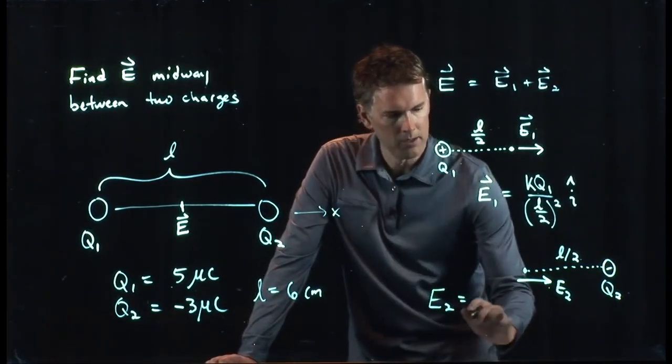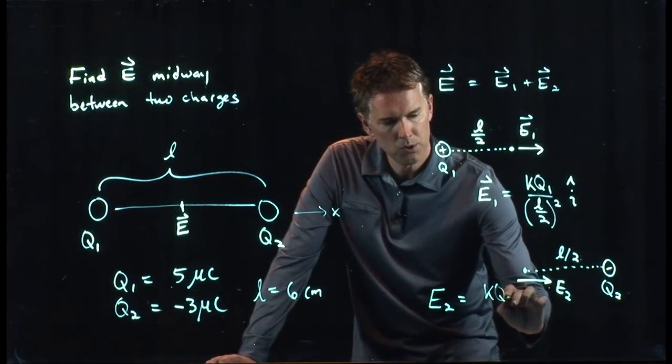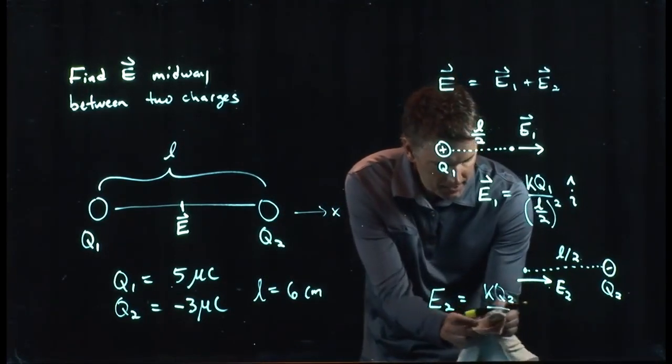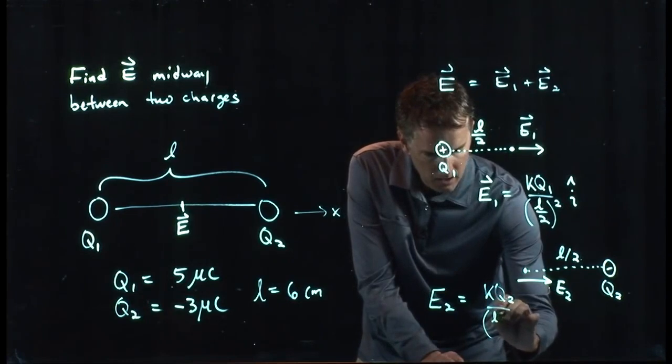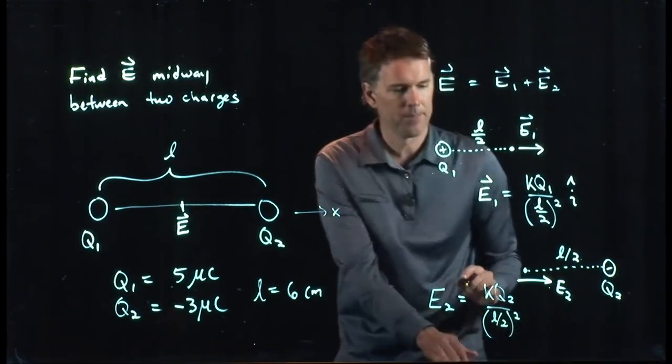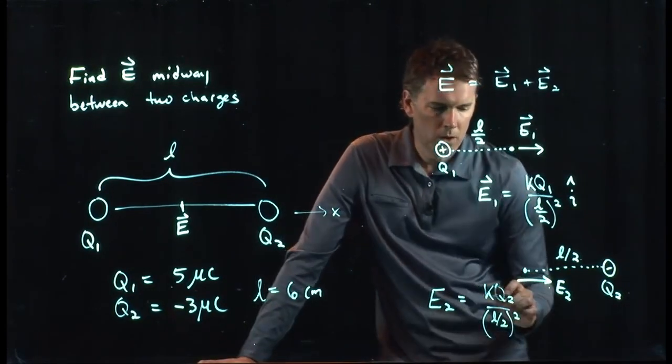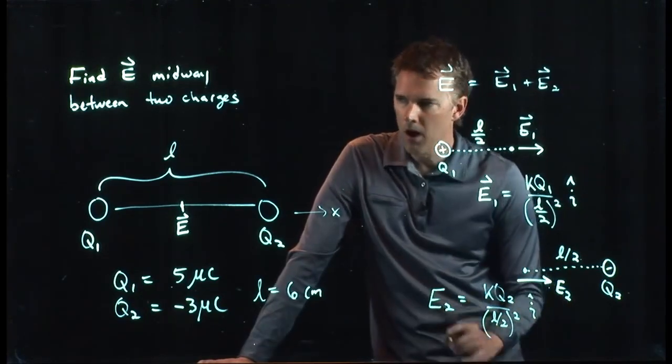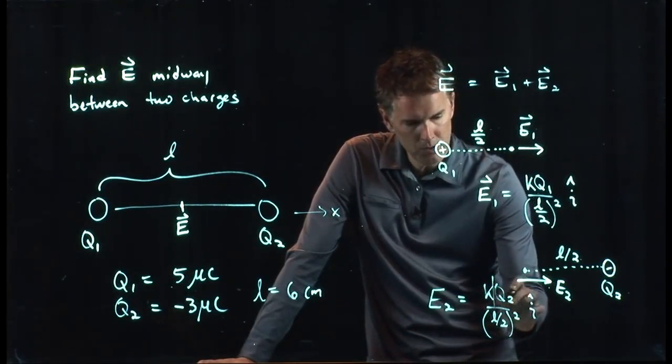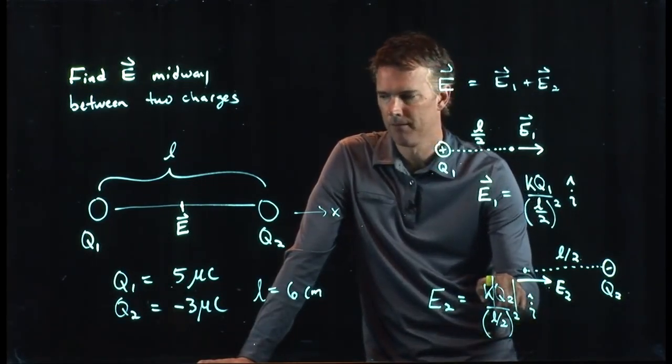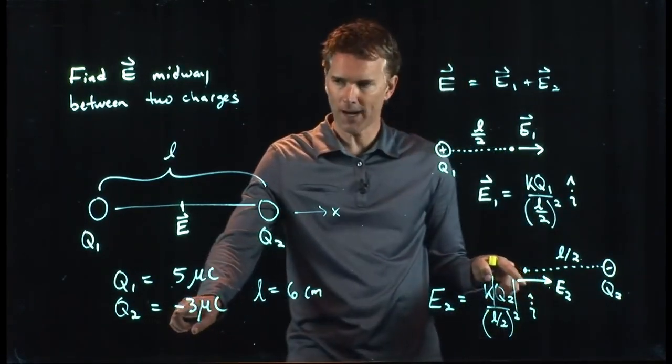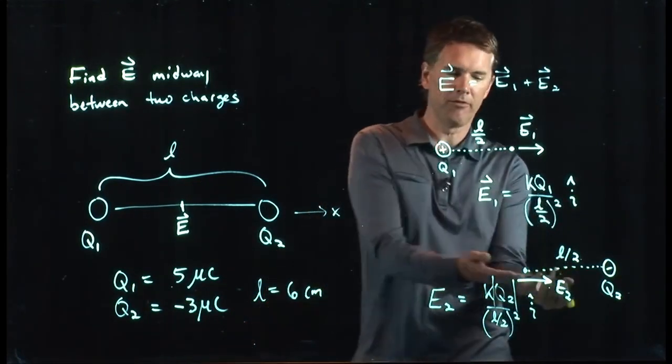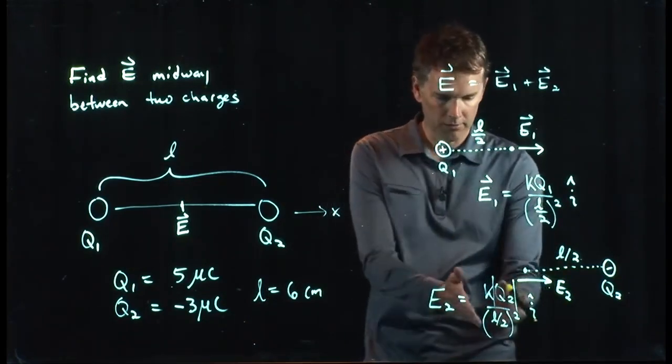E2 is KQ2 over R squared. And we know what R is, we'll just put that in right now. L over 2 quantity squared. And we know that it's to the right and if it's to the right, then we can put an i hat right there, as long as we remember that this Q2, we're going to use a positive number there. You've already taken into account the direction with this arrow. So you don't want to put an extra negative in there because that would flip that arrow back to the left. So this is what we want for E2.